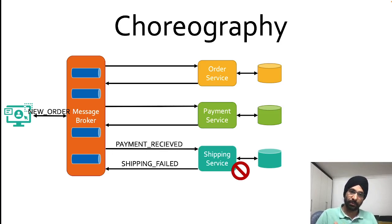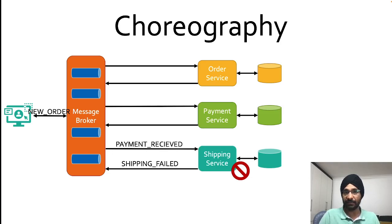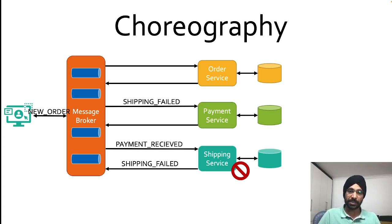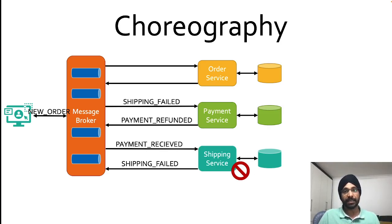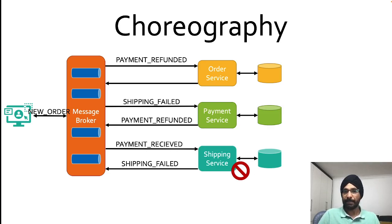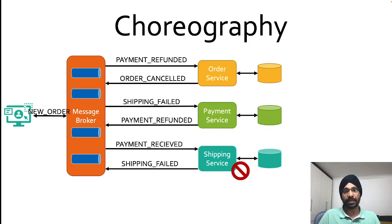The most interested party in listening to these failures is of course the payment service, because we need to issue a refund to the client. The order service is also interested in these negative events so it can cancel the order if needed. So when the 'shipping failed' event arrives, the payment service — which has subscribed to that topic — will do its workflow, process the refund, and then publish a 'payment refunded' event. The order service, listening to that topic, will then complete its workflow and publish 'order cancelled'.